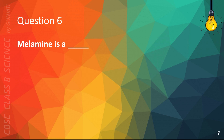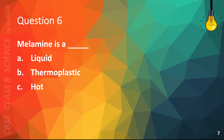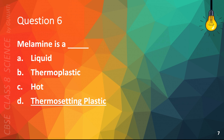Question 6. Melamine is a A. Liquid, B. Thermoplastic, C. Hot, or D. Thermosetting plastic. The correct answer is D. Thermosetting plastic.